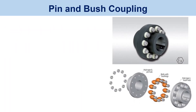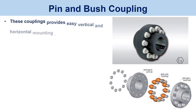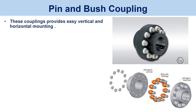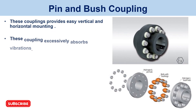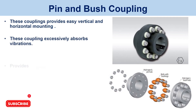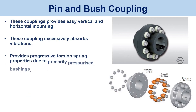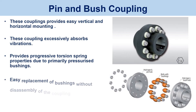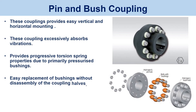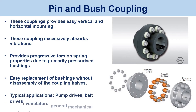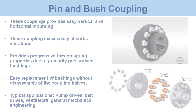Pin and bush coupling. These couplings provide easy vertical and horizontal mounting and excessively absorb vibrations. They provide progressive torsion spring properties due to primarily pressurized bushings, and allow easy replacement of bushings without disassembly of the coupling halves. Typical applications include pump drives, belt drives, ventilators, and general mechanical engineering.